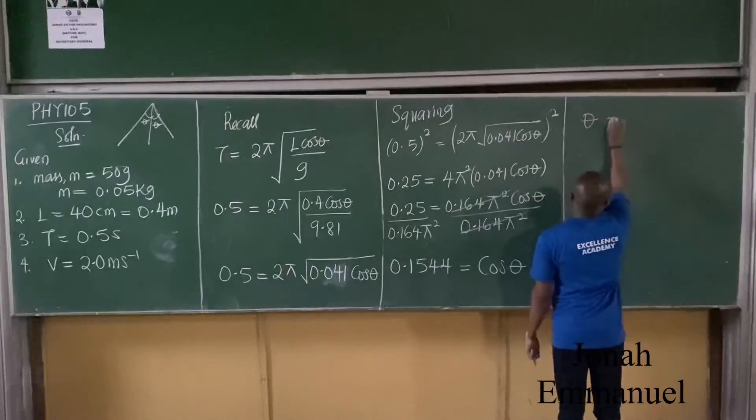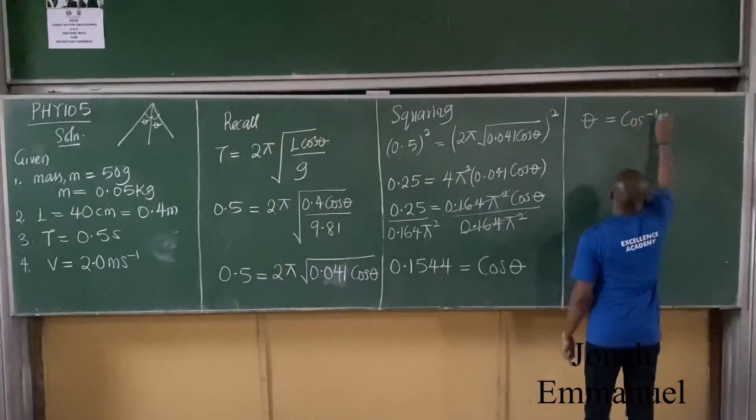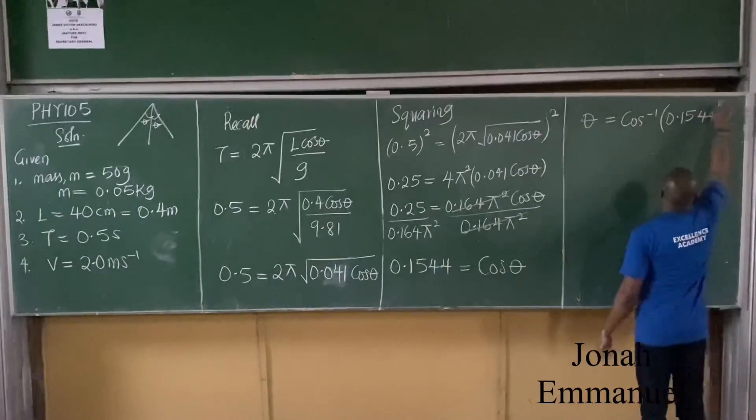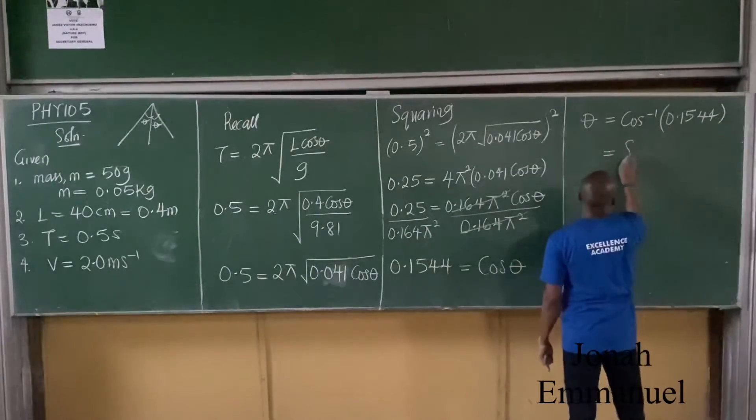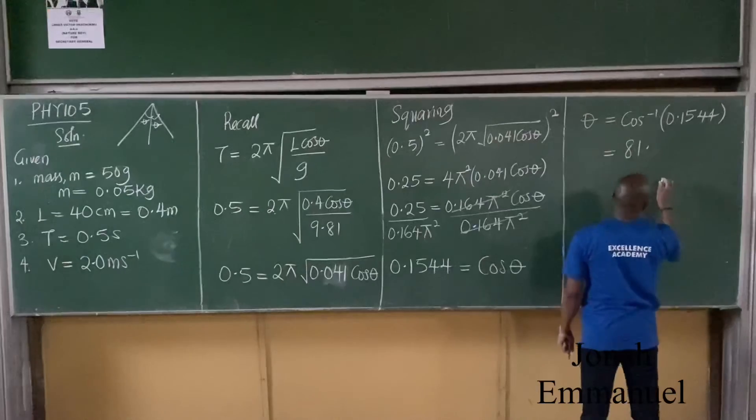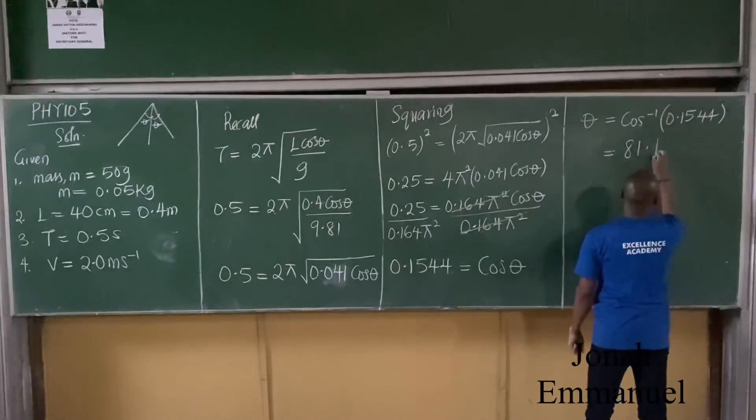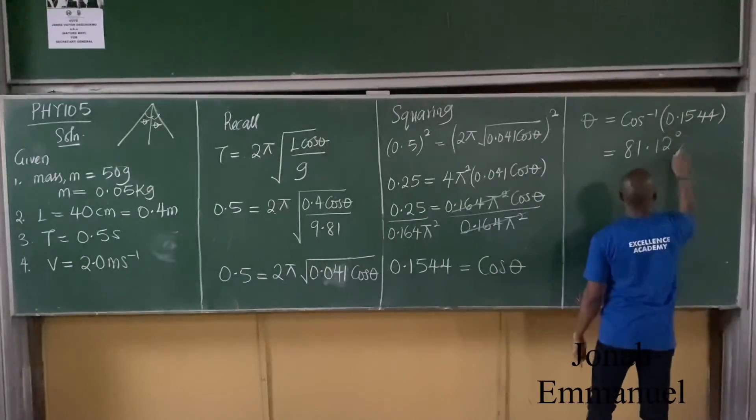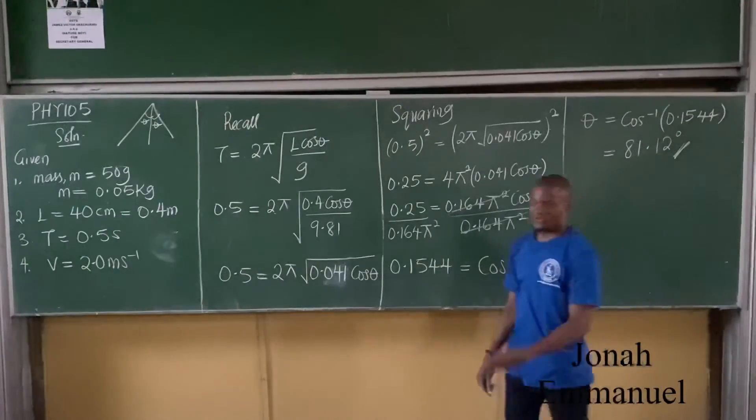From here, theta equals cos inverse of 0.154. That's 1.5. That's how you solve it.